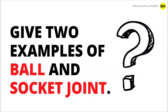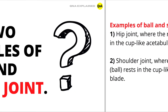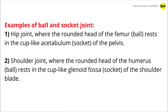Hello everyone. In this video we will discuss two examples of ball and socket joint. The first one is the hip joint, where the rounded head of the femur — the ball — rests in the cup-like acetabulum — the socket — of the pelvis.